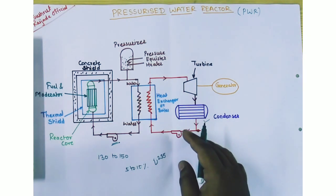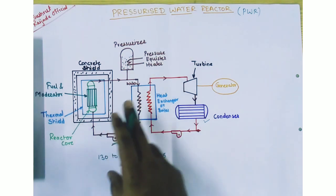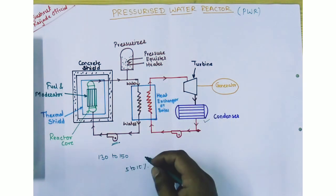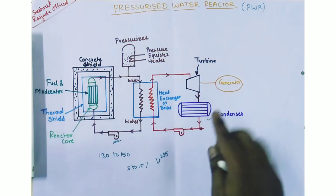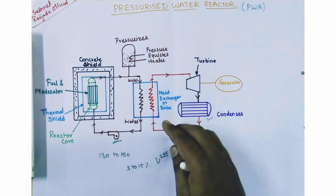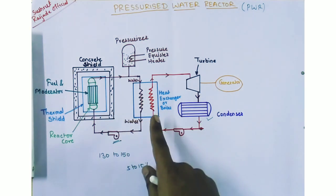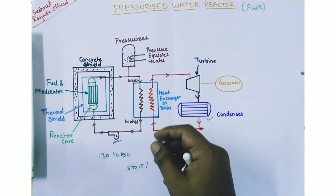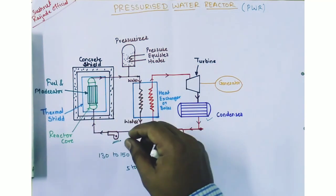The disadvantages of PWR are: first, the capital cost is high since the reactor and primary circuit work under pressure, requiring high-cost material that can sustain 130 to 150 bar. Second, only saturated steam can be produced in the secondary circuit, so the efficiency of the plant is low. Third, the shielding required is costly. Fourth, severe corrosion problems occur since water is used as coolant and moderator. Fifth, the fuel suffers from radiation, making its reprocessing difficult.